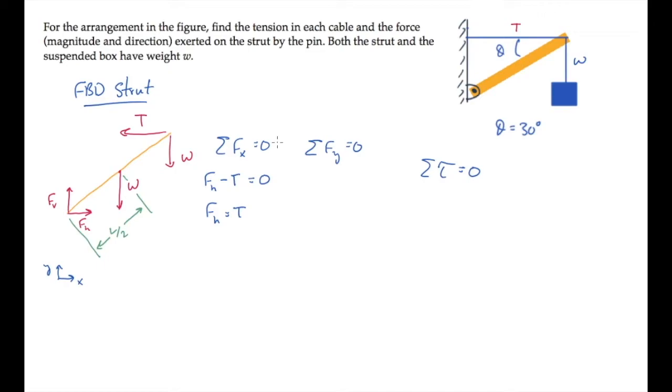We don't know the tension, so let's move on and sum forces in the vertical direction. There we have Fv, the vertical component of the pin force. We have two weights going down, so minus 2w. Those sum to zero, telling us that Fv equals two times w.